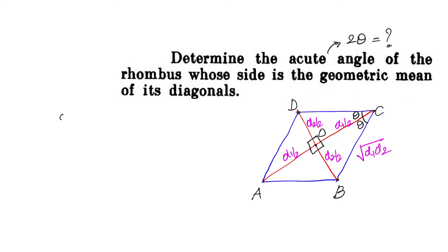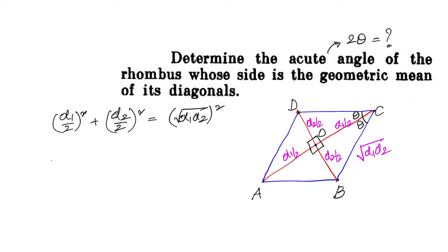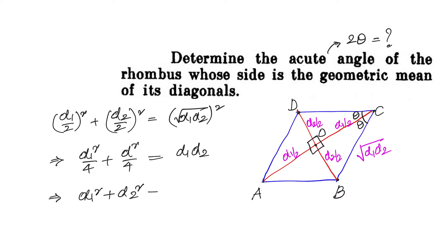We can say that (d1/2)² + (d2/2)² = (√(d1·d2))², which gives d1²/4 + d2²/4 = d1·d2. Simplifying, we get d1² + d2² - 4d1d2 = 0.